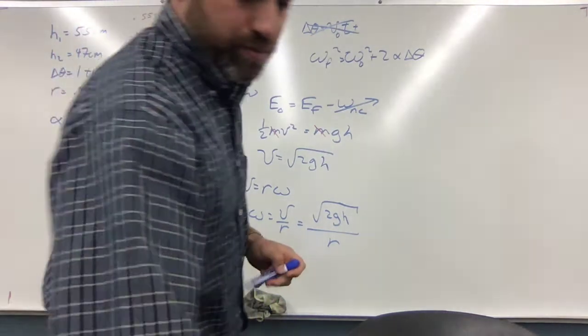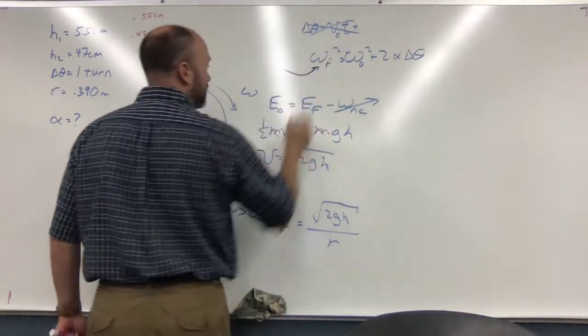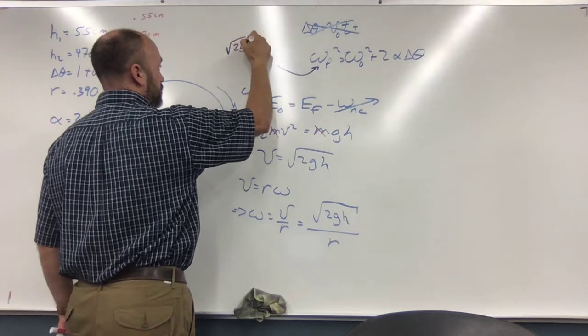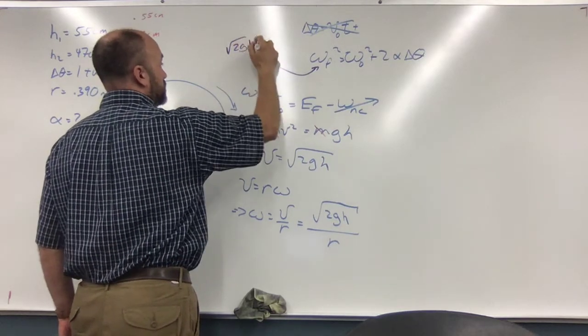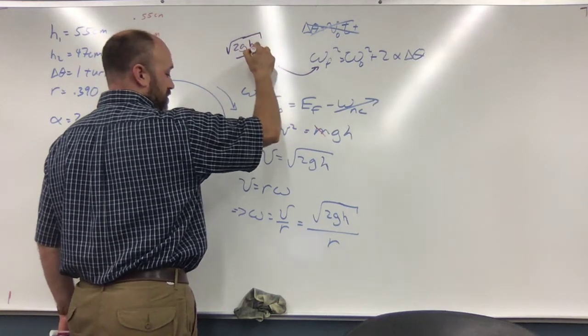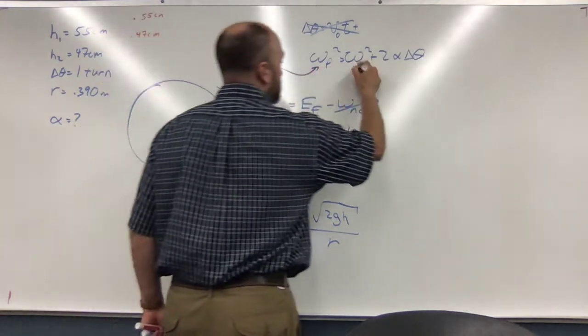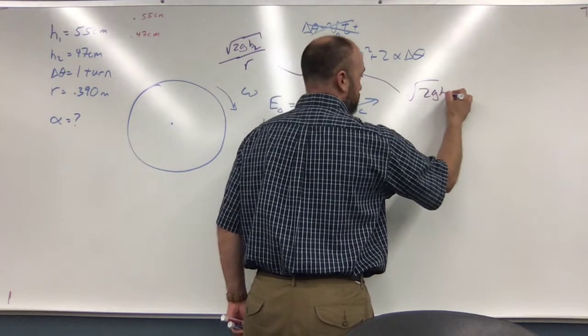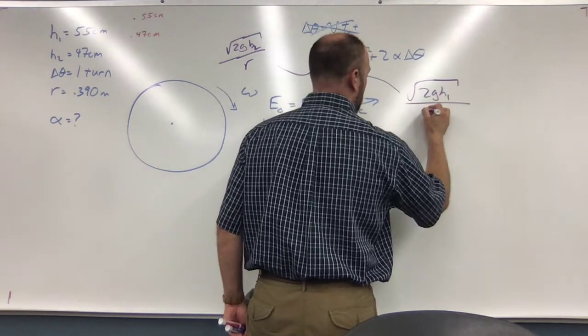So let me write that in purple here. This one would be square root of 2G H2 divided by R. This one would be square root of 2G H1 over R.